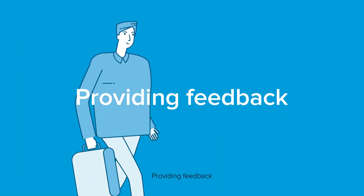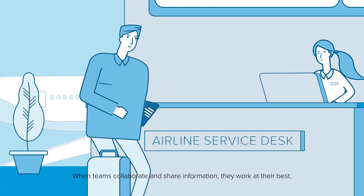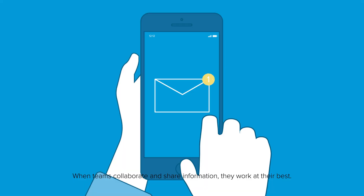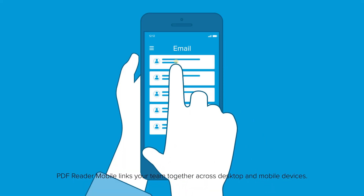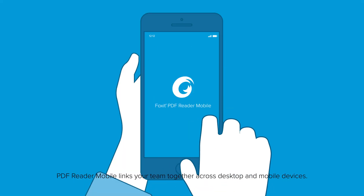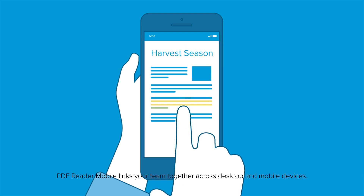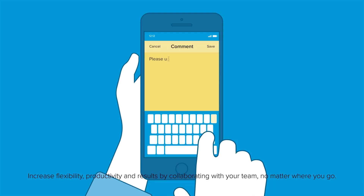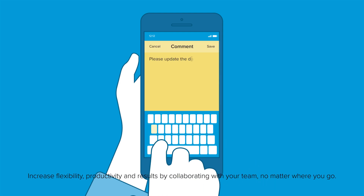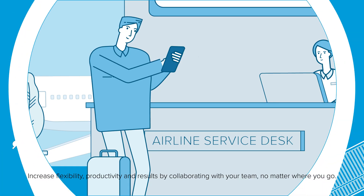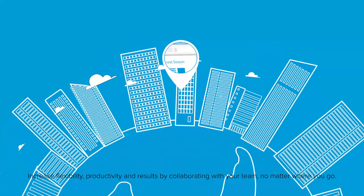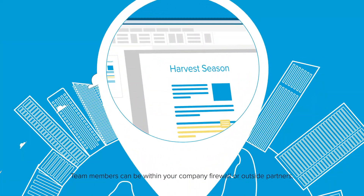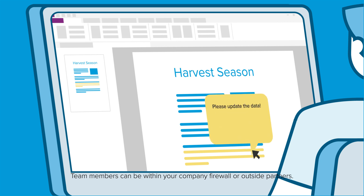Providing feedback. When teams collaborate and share information, they work at their best. PDF Reader Mobile links your team together across desktop and mobile devices. Increase flexibility, productivity, and results by collaborating with your team no matter where you go. Team members can be within your company firewall or outside partners.